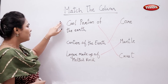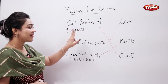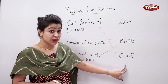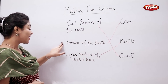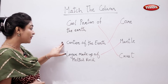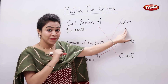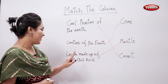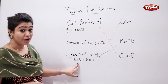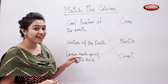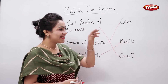Cool portion of the earth is crust. Center of the earth is core. Layer made up of melted rock is mantle.